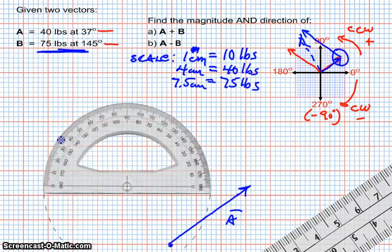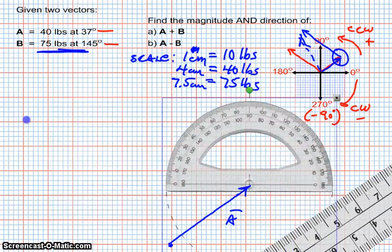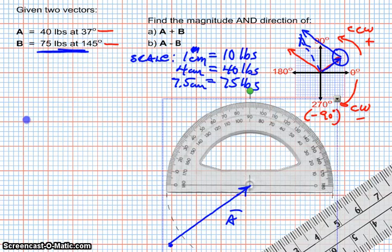90, 145 would be over here. So it's going to point in that direction. And in order to do this, we have to move the protractor so that it's on the very end of A, because we're going to be tip to tail.